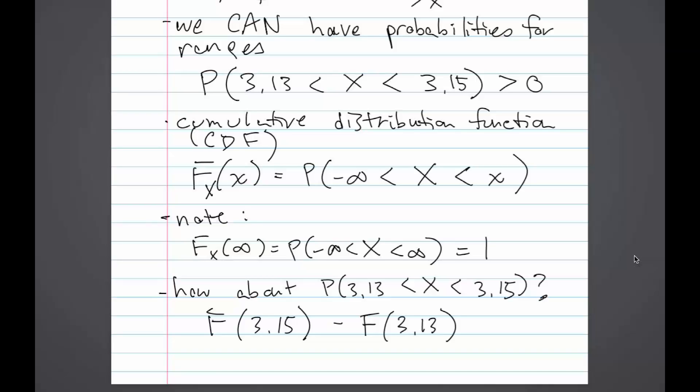Now how about going back to our original problem if we want to calculate the probability that X is between 3.13 and 3.15? That would just be big F of 3.15 minus big F of 3.13.